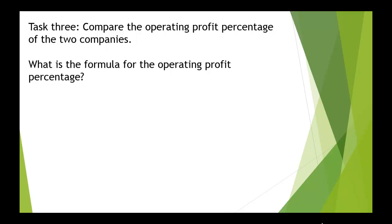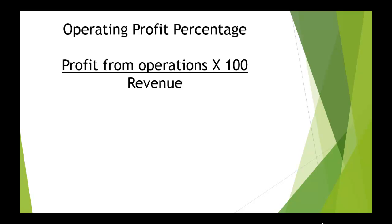The third task is to compare the operating profit percentage of the two companies. We need to know the formula for the operating profit percentage. The profit from operations times 100 divided by the revenue gives our operating profit percentage.